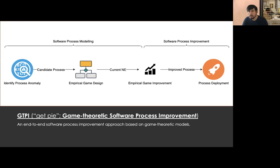GetPi stands for Game Theoretic Process Improvement and is composed of four steps. In the first one, we identify a process anomaly, like the freelancers not cooperating. In step two, we build a game theoretic model of the process to improve, like the payoff table in the previous slide. Having the model ready, we can obtain a Nash equilibrium and see if it matches the process anomaly identified in step one. If that is the case, in step three, we can use the game theoretic model to experiment with process interventions. Once we have found an adequate process intervention — meaning its model shows the desired behavior at equilibrium — we proceed to the last step of GetPi and deploy and adopt the improved process.